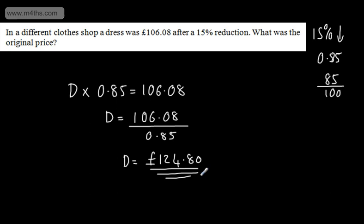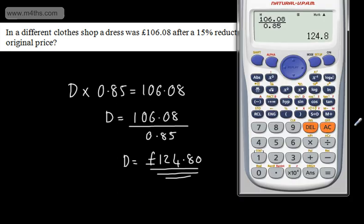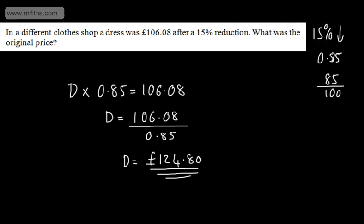Again, with that calculation, don't fall into a trap of saying that this is £124.08. It's 0.8. It'd be 0.8 if it was 8 pence. So there we go. That is what it cost before. Now, if you think about this, if we found 10% and took that off, that's like 15%, that's what we'd end up with.